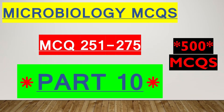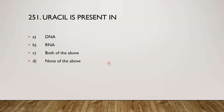Hello friends, today in this video I am going to discuss MCQs on general microbiology. This is the 10th part of the series of 500 MCQs on microbiology. Let's start the question and answer session on general microbiology with explanation. The first question is: uracil is present in DNA, RNA, both of the above, or none of the above?